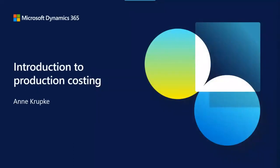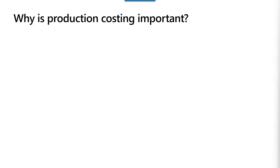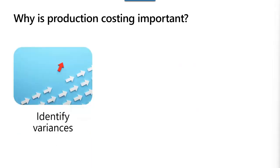As we dive into production costing, let's talk about some high-level concepts. No matter what costing methodology you're using, there are several reasons why production costing is important. First is the ability to track variances. When you use standard costing, analyzing variances is even easier because you can track those changes in your general ledger. With any costing methodology, analyzing variances can help your organization spot when there is a problem — a shift in the market or supply chain, for example.